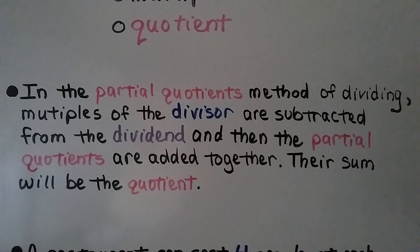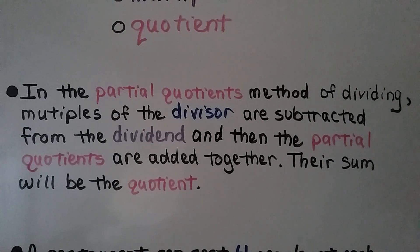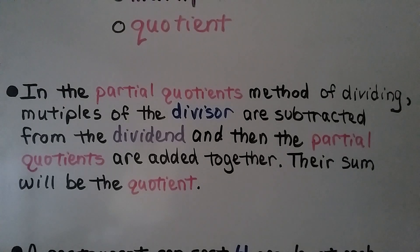In the partial quotients method of dividing, multiples of the divisor are subtracted from the dividend. Then the partial quotients are added together, and their sum will be the quotient.